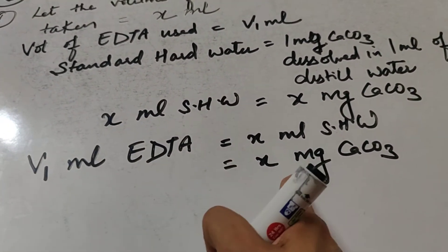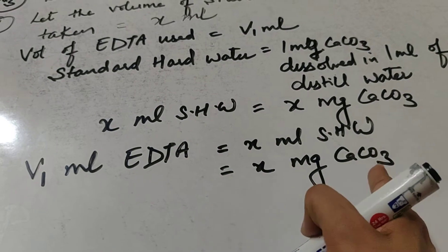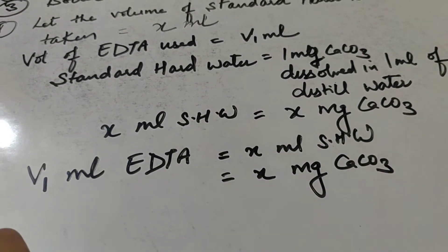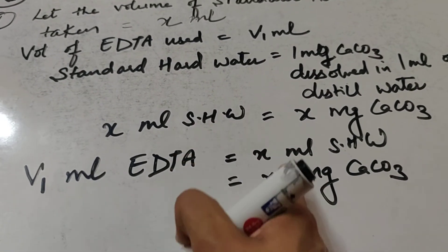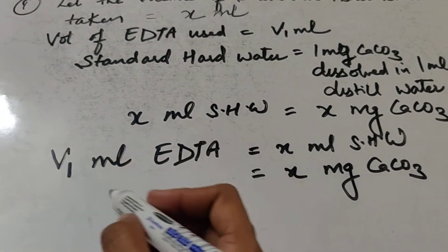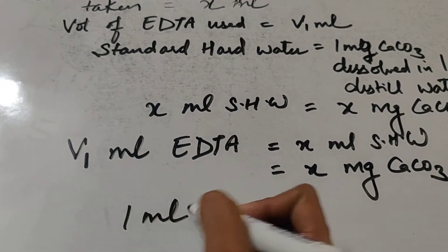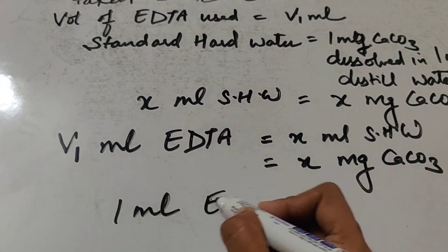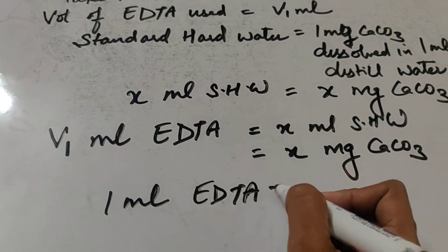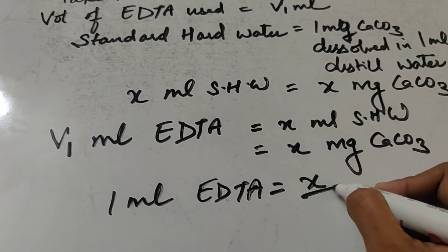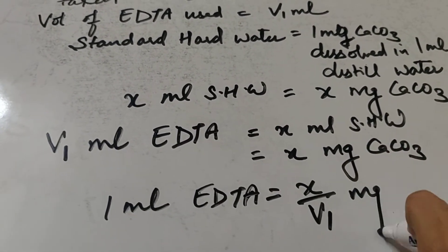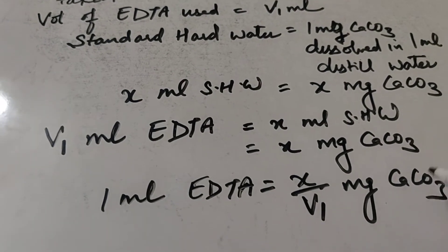V1 ml EDTA neutralizes X mg of CaCO₃, because in X ml, X mg CaCO₃ is present. Therefore, 1 ml EDTA neutralizes X/V1 mg of CaCO₃.